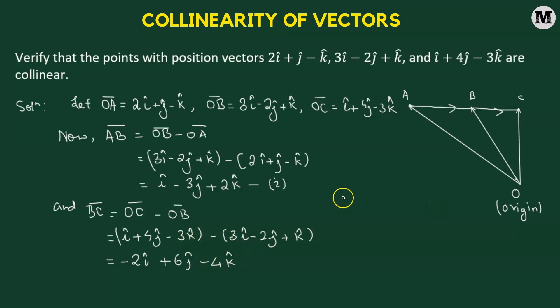So, this is the vector BC. However, we can take negative 2 as the common factor. So, negative 2 times i cap minus 3j cap plus 2k cap. And we can rewrite BC as negative 2 times the vector AB.